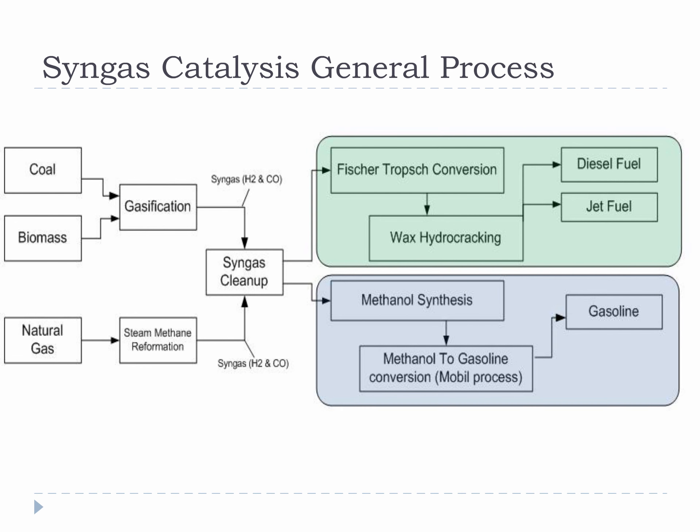This is an overall flow diagram of Fischer-Tropsch and methanol synthesis from coal, biomass, and natural gas. Please take a moment to trace the various process flows so that you develop a rough understanding of the sequence of operations.